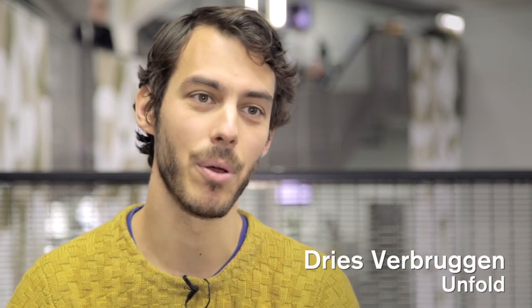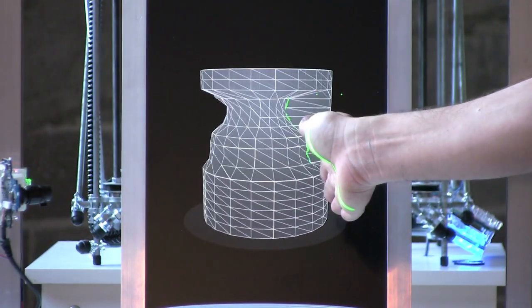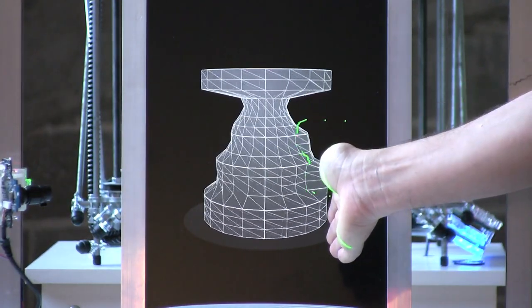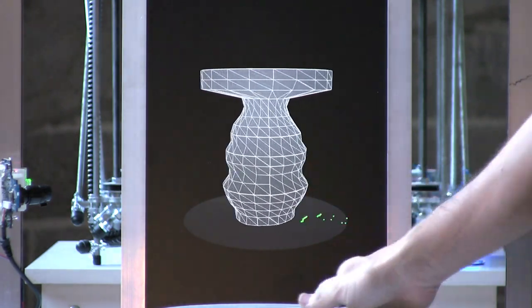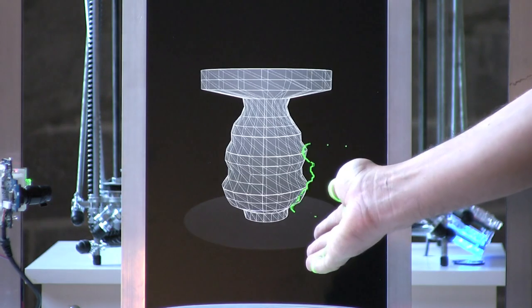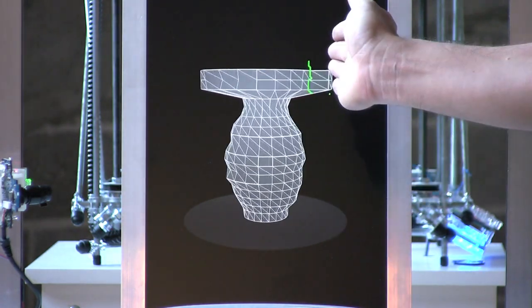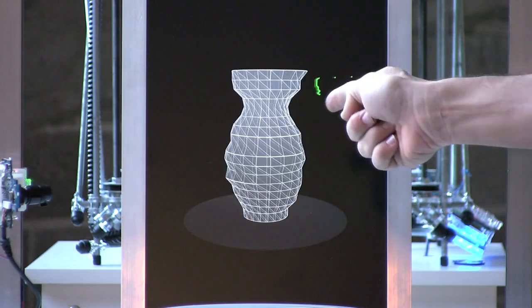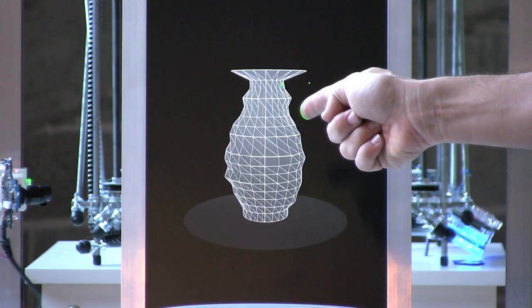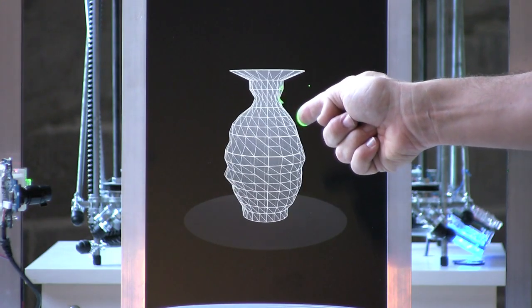I'm Dries Verbruggen from Belgium-based design studio Unfold. We're a studio that focuses mainly on the intersection between digital making and physical making. What happens when the two intersect with each other, and more importantly, what implications has that on our role as designers, on our profession and our industry in general.